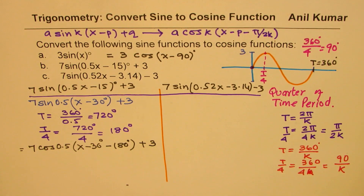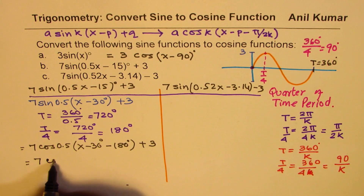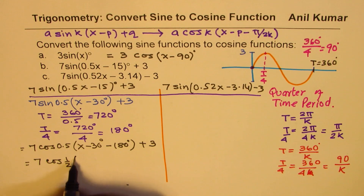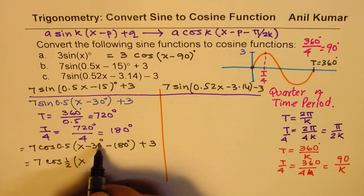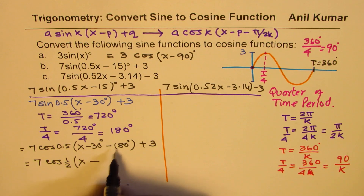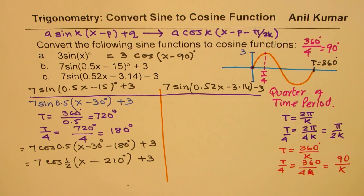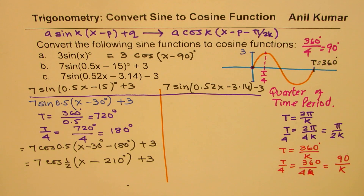To write this as a cosine function, we write 7 cos(0.5(x - 30°) - 180°) + 3. Both negatives combine to give 7 cos(0.5(x - 210°)) + 3. So that becomes the cosine function equivalent to the sine function given — part B is done, and this was in degrees.